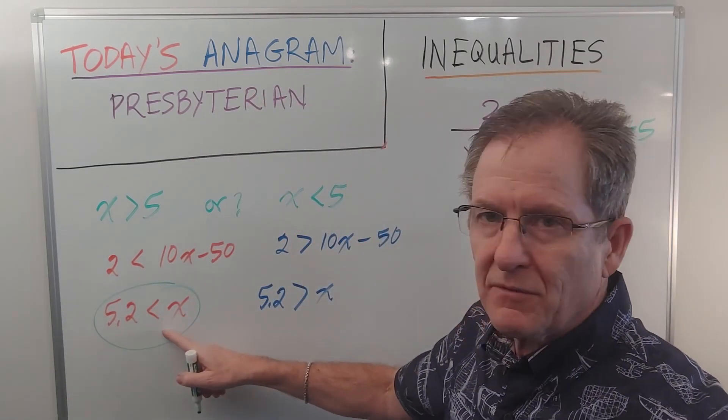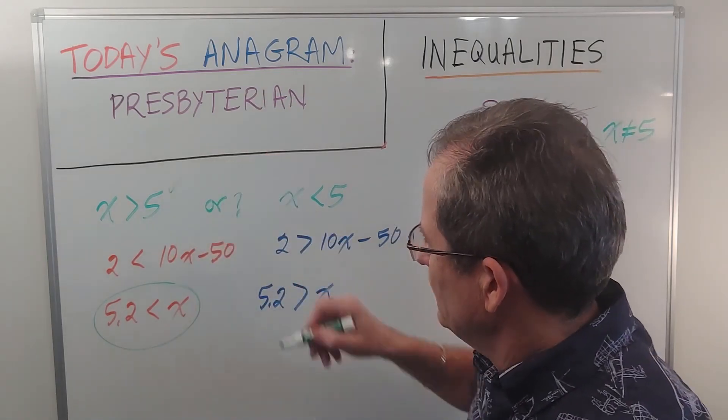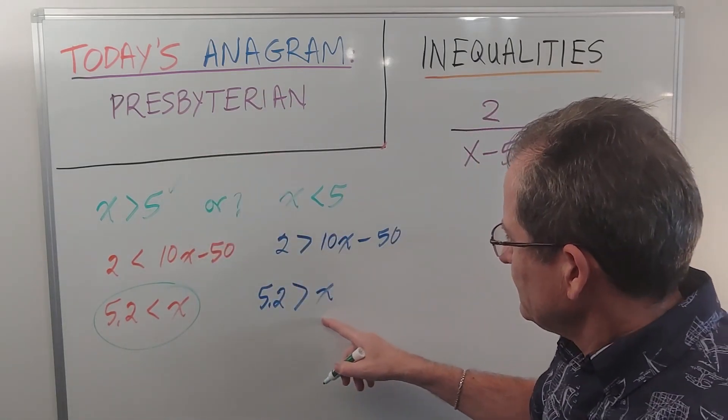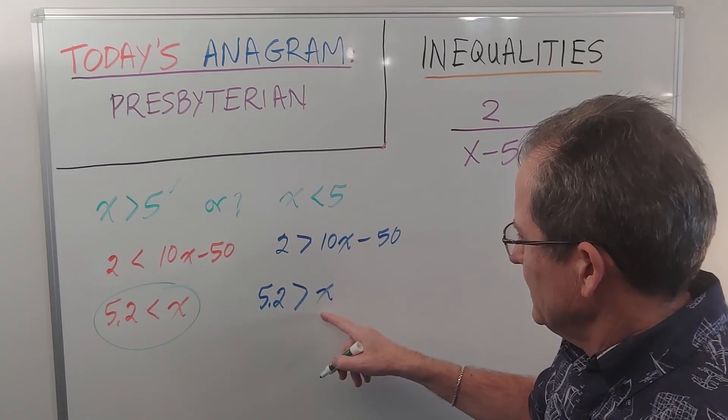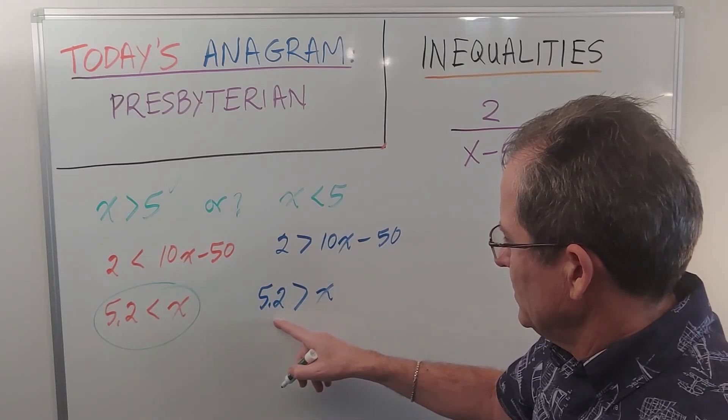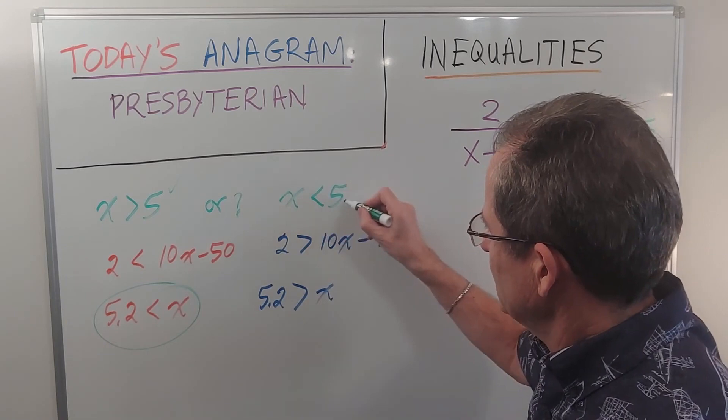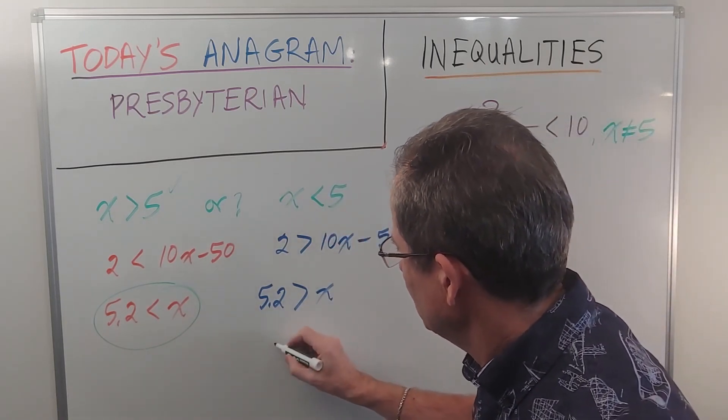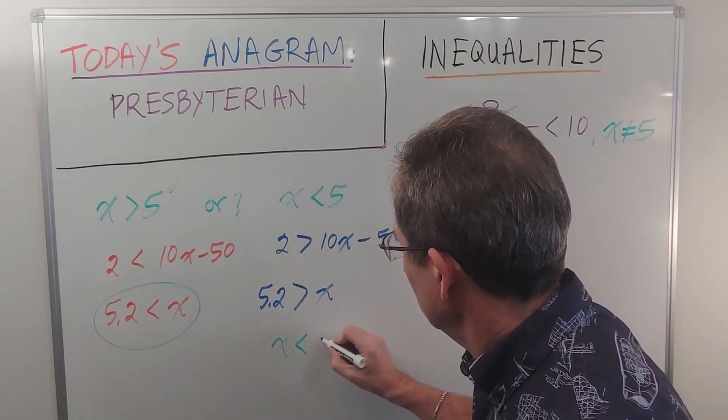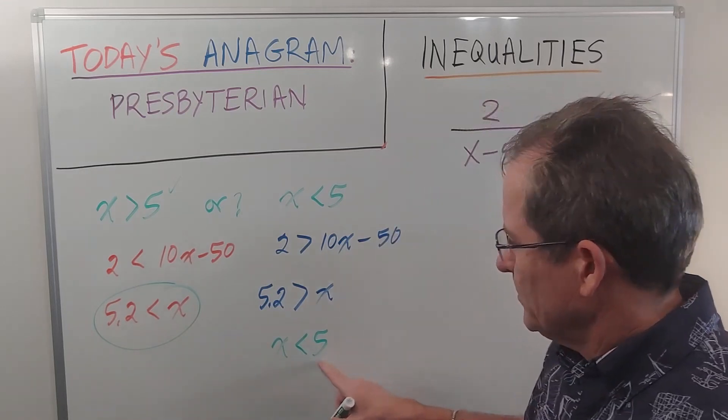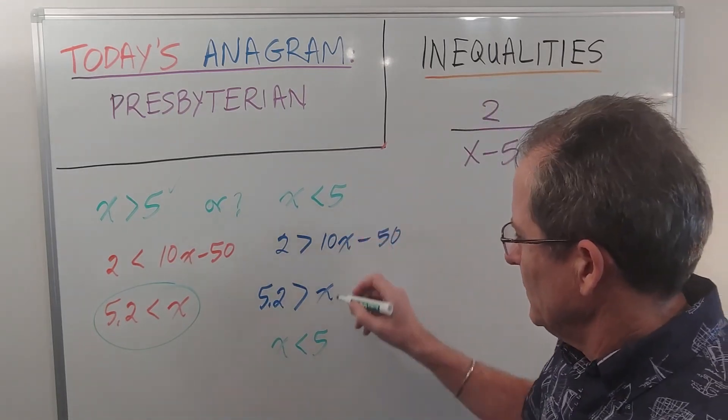x has to be bigger than 5.2, which agrees with this. Over here, it says x is less than 5.2, but this is more restrictive. x must be less than 5. So here we have to come up with the proper inequality, which is the same as this one.